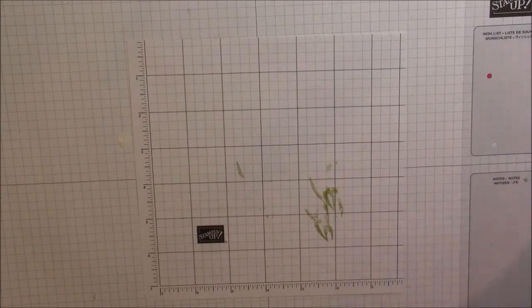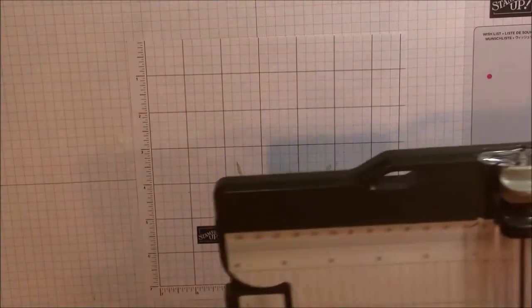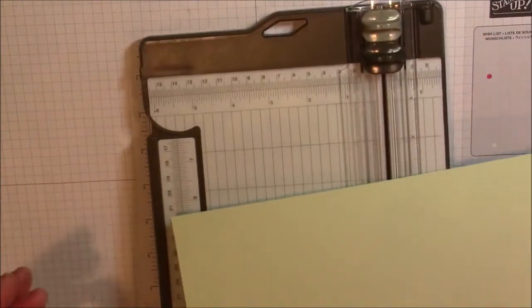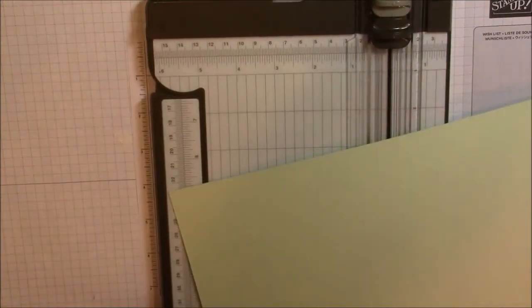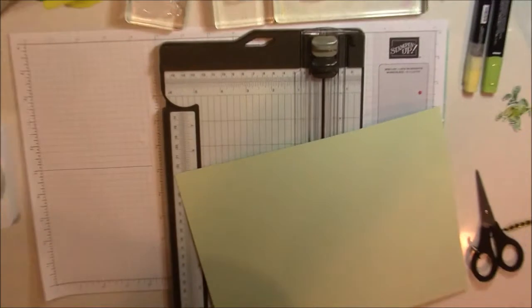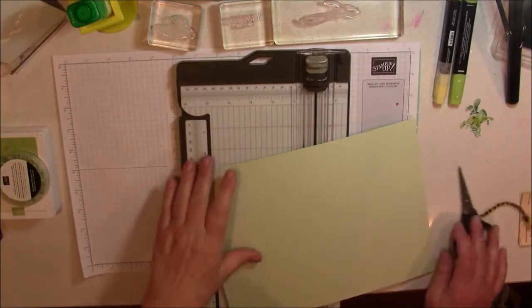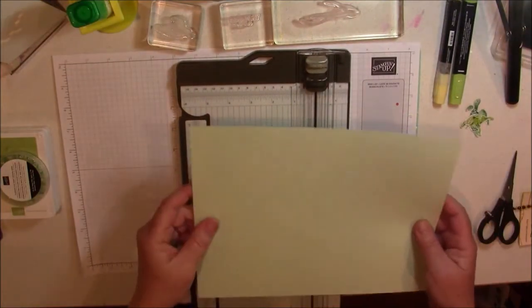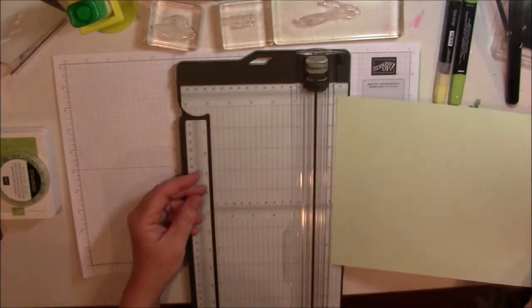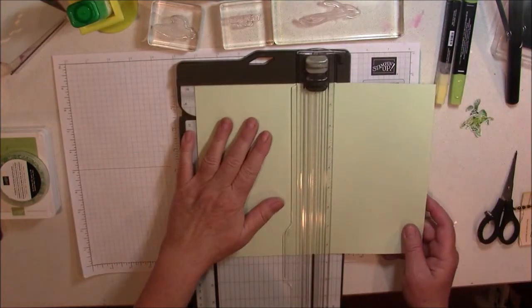My card base is going to be soft sea foam. I decided to cut my card stock in front of you today. We are starting with an 8.5 x 11 piece of card stock. We are going to cut it in half at 5.5 inches.